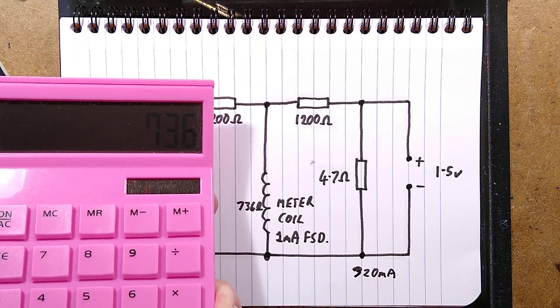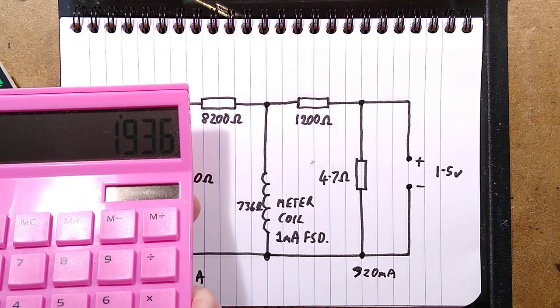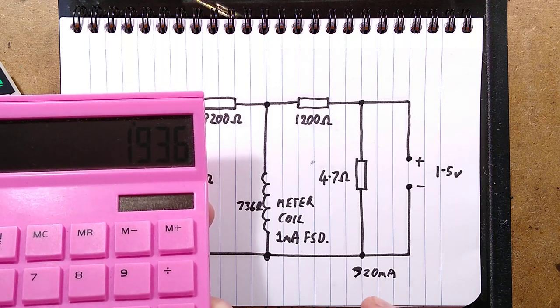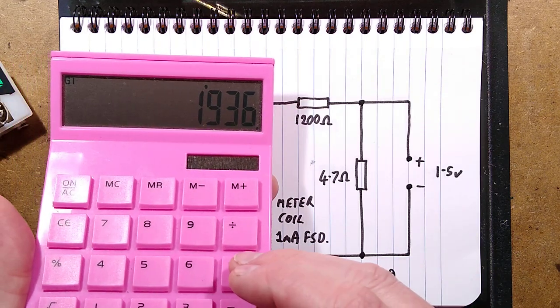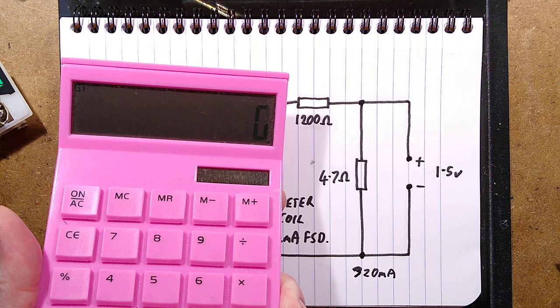1,936 ohms times the 1 milliamp required, 0.001. It means it's going to have to be 1.9 volts to actually make it go right.